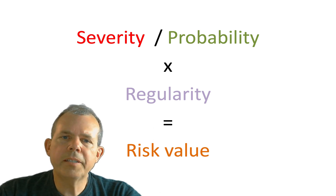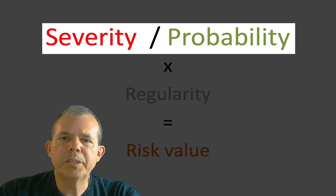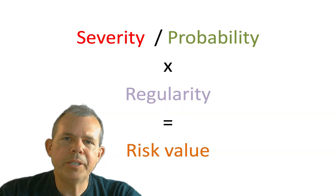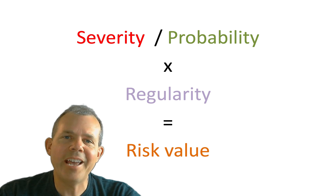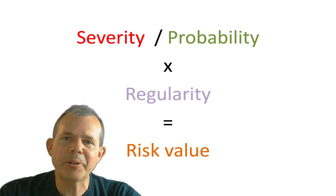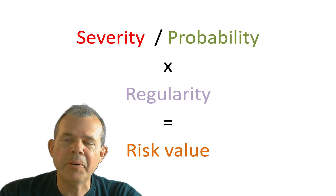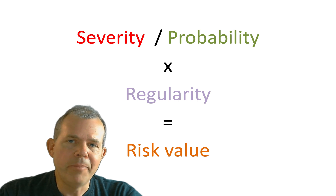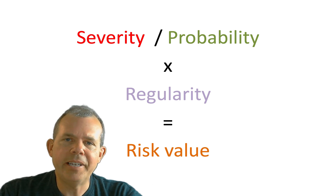Let's distinguish between the severity of an item and the probability of an item with a few remarks from Alex Honnold. He's known as the first person — and I believe the only one — to free-climb the enormous cliff of El Capitan in Yosemite National Park.